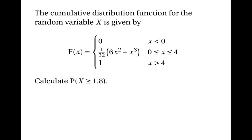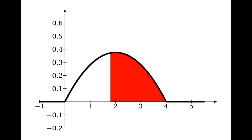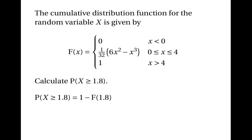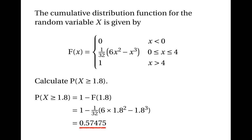Here's a similar question: find the probability that x is greater than or equal to 1.8. If we drew the graph of the probability density function, we'd see we need to work out the area under the curve to the right of 1.8. One way to find that is to take the total area under the curve, which must be 1, and subtract the area to the left of 1.8, which is F of 1.8. So the probability is 1 minus F of 1.8. F of 1.8 is 1 over 32 times 6 times 1.8 squared minus 1.8 cubed, and subtracting from 1 gives 0.57475.